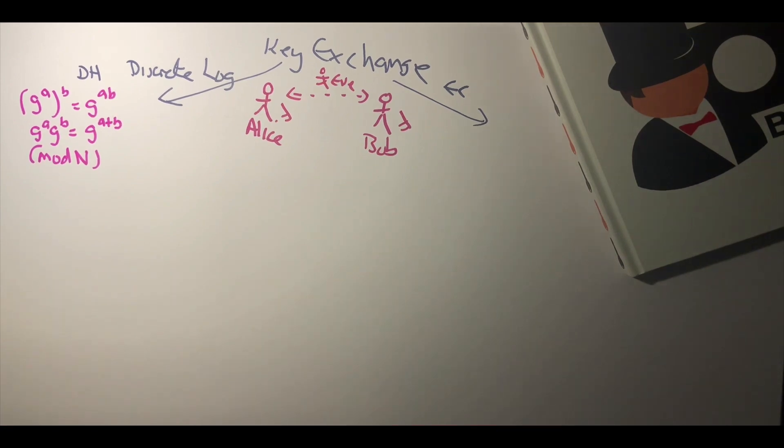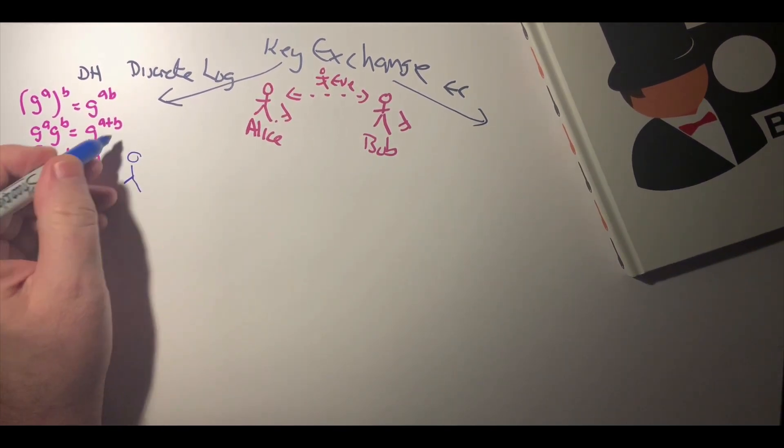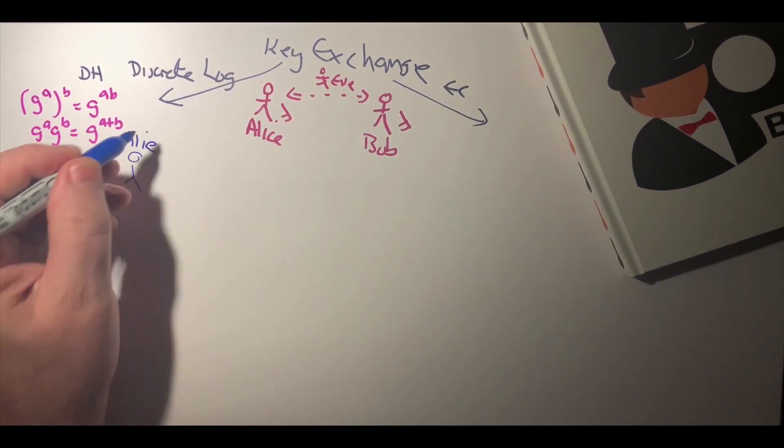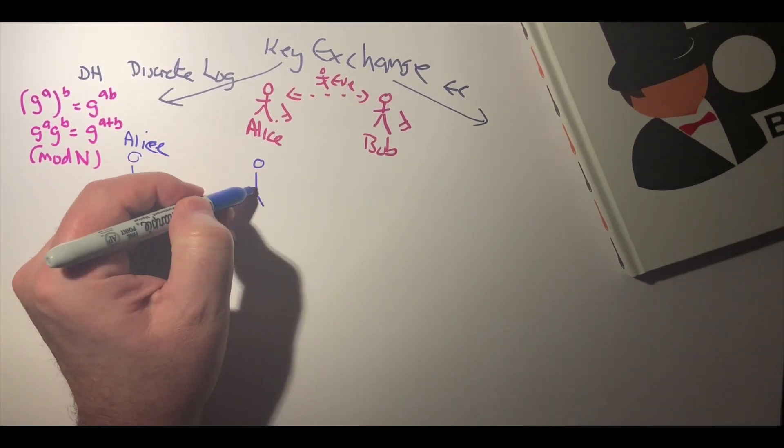That was solved by Whitfield Diffie, and we define it as the Diffie-Hellman method. So for this method we have Alice and we have Bob.